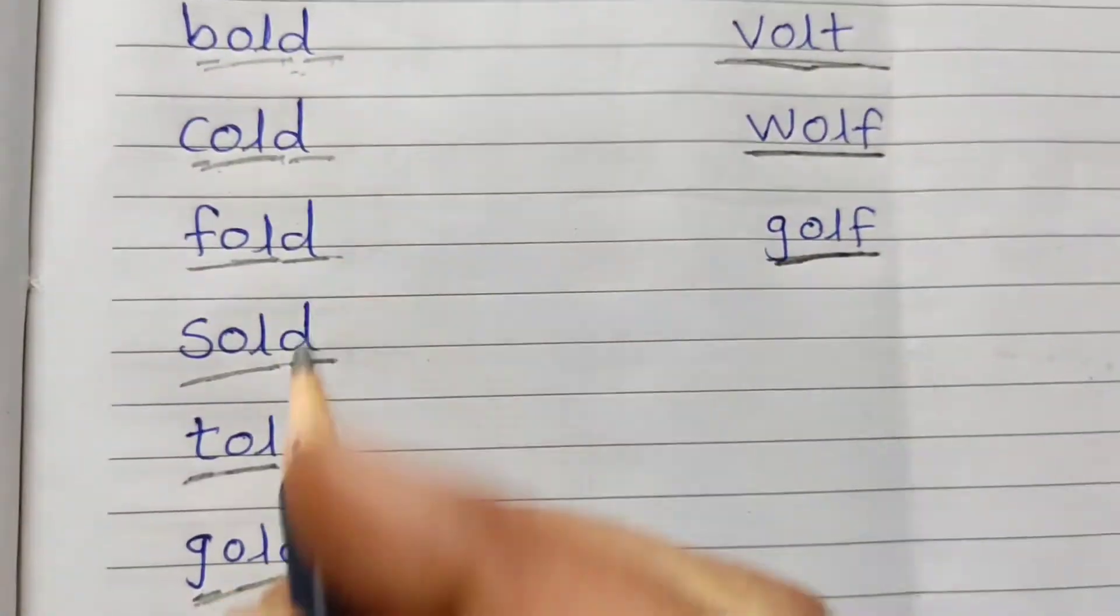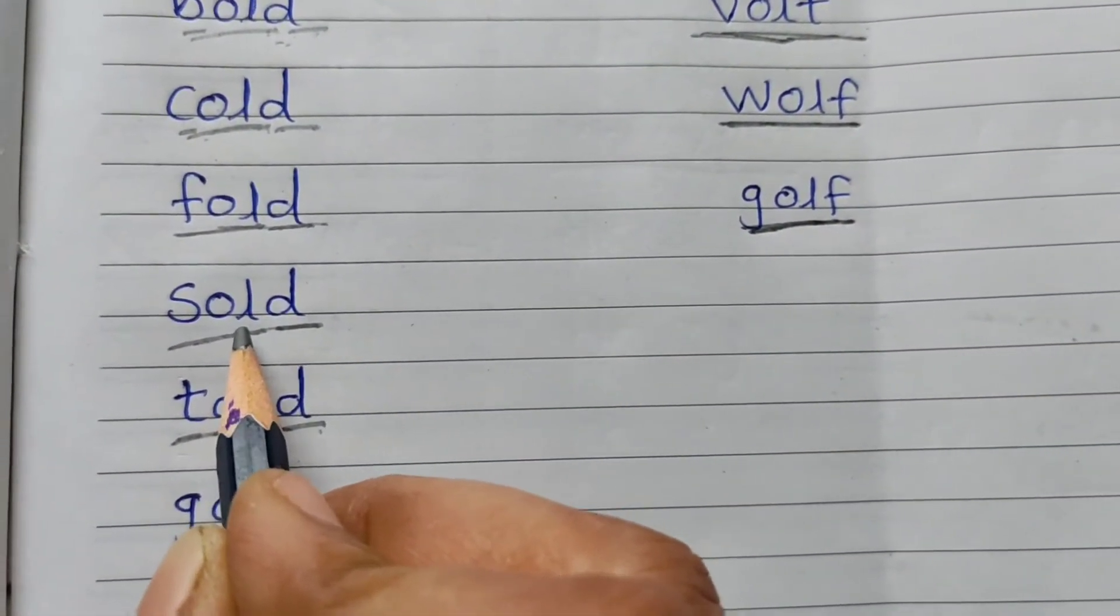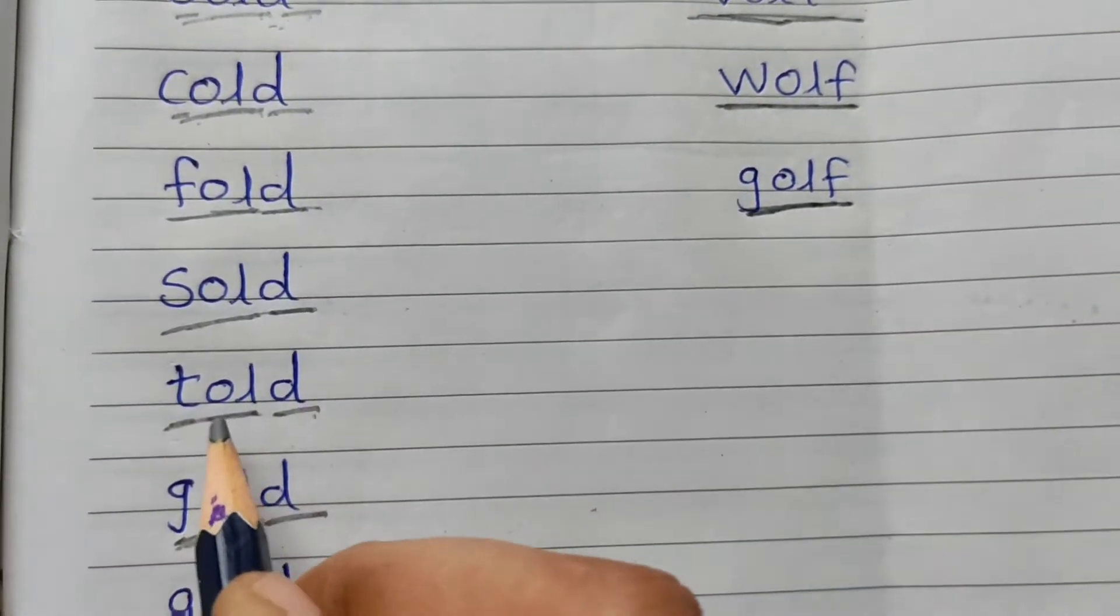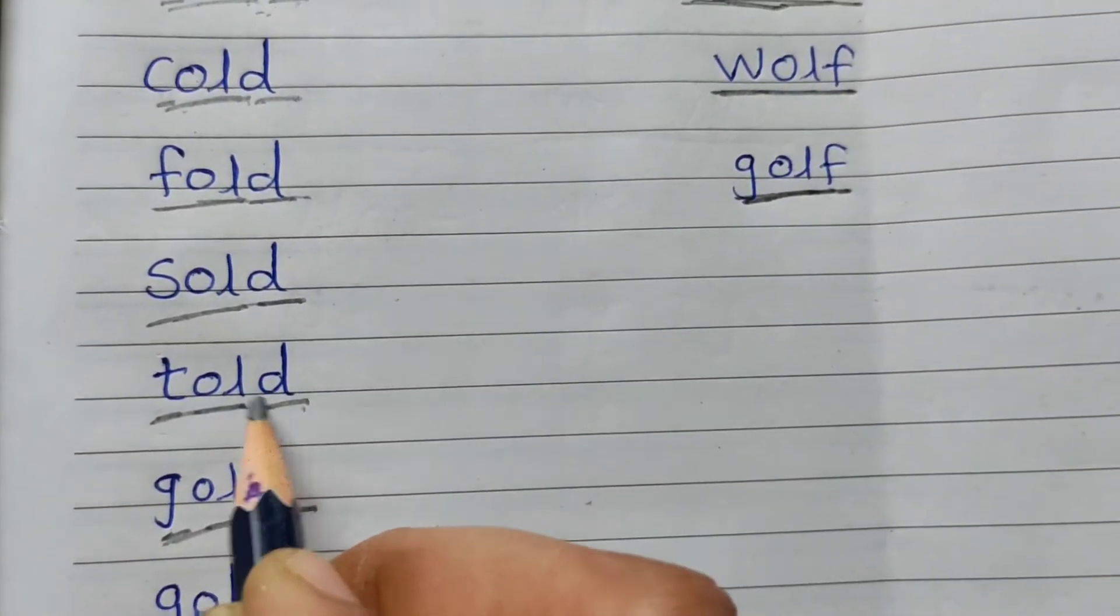Sold means bechna, bech diya. Told means batana.